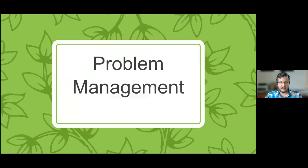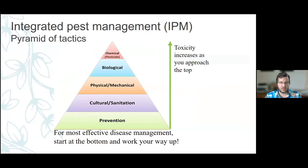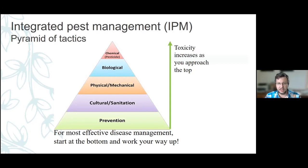When we're talking about diseases, it's really more about disease management, problem management. I really recommend taking an integrated pest management approach. Similar to the old food pyramid, you want to start at the bottom and work your way up. The most effective disease management is working from the bottom to the top: prevention first — an ounce of prevention is worth a pound of cure — then cultural and sanitation methods, then physical barriers. Finally, at the very top is chemical control, which really should be the last line of defense.